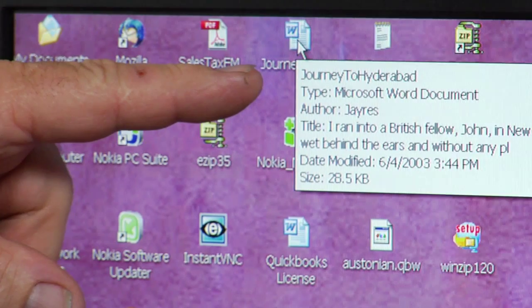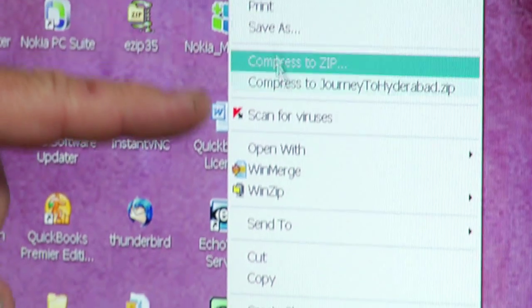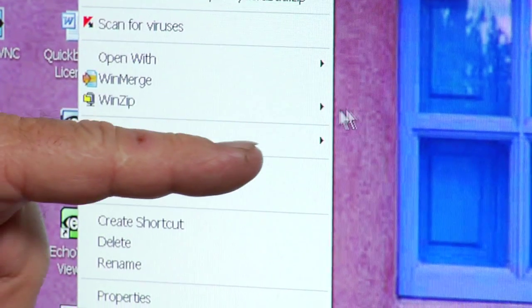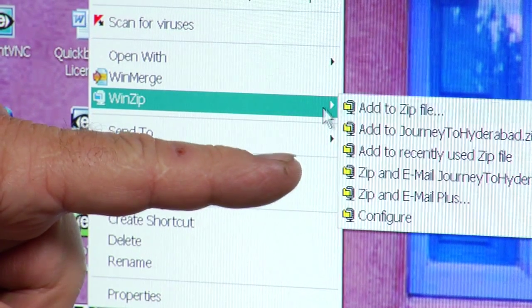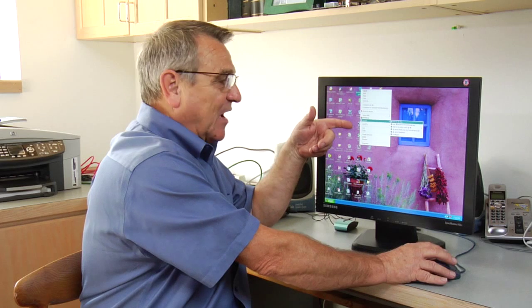So what I'm going to do is I'm going to go up to this Word document and I'm going to right-click on it and I'm going to go down to the WinZip and WinZip says add to zip file. That's what I'm going to do because I'm going to zip this file.